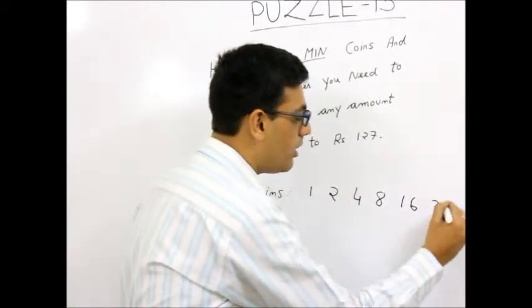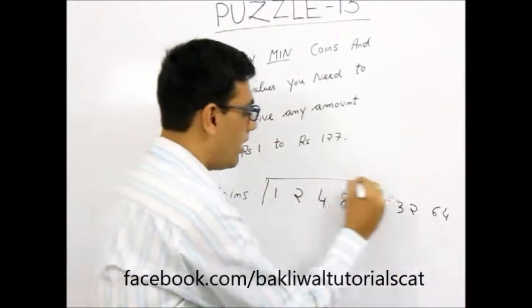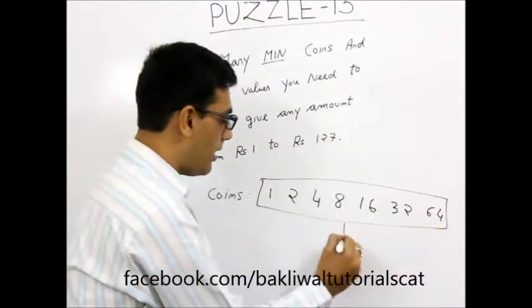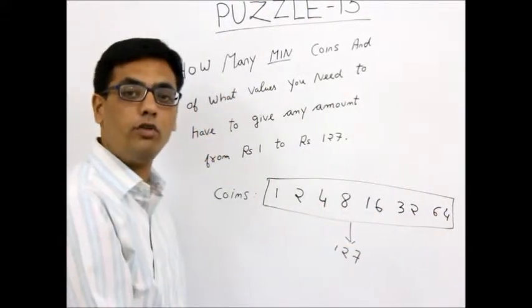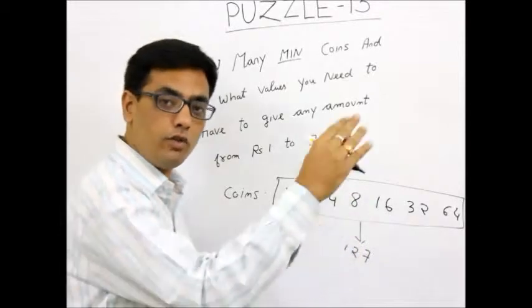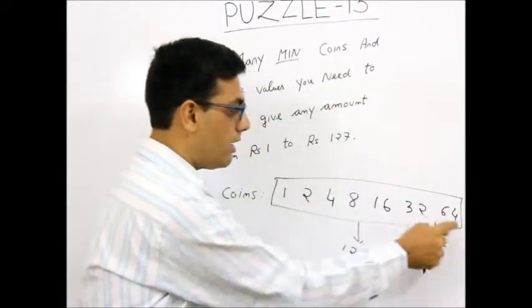So therefore the next coin I would need is 32 and the next I would need is 64. If you add these numbers, it will turn out to be 127. It is a property of powers of 2. If you add them, they are always 1 less than the next power. So the next power is 128. If you add, 127.